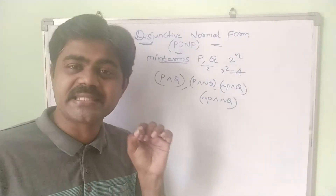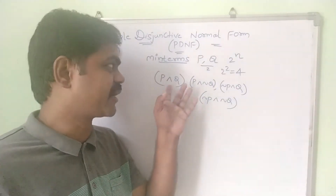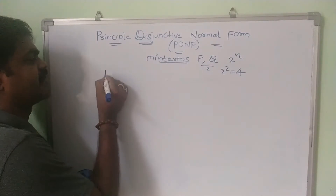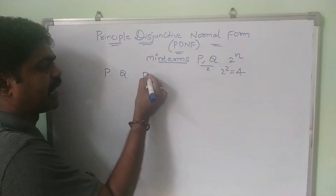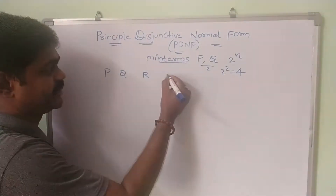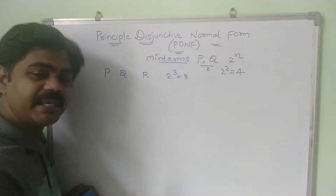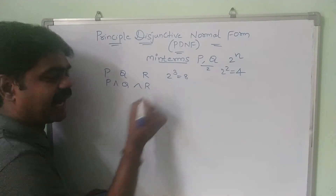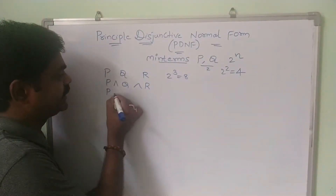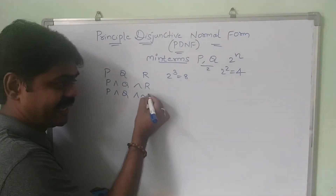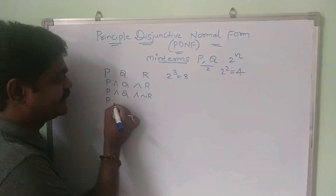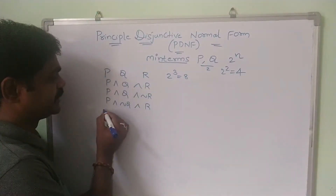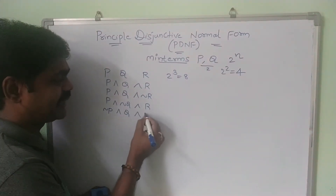Each minterm must not miss any single literal — it should cover all the variables. For three variables P, Q, and R, we need 2^3 = 8 minterms. The first is P∧Q∧R, the second is P∧Q∧¬R, the third is P∧¬Q∧R.